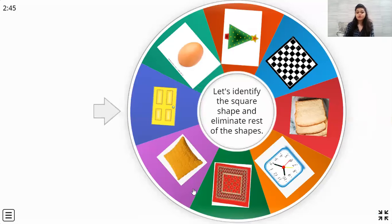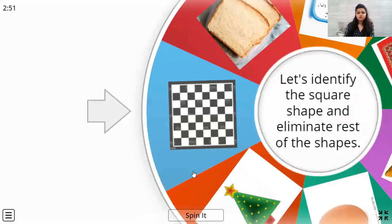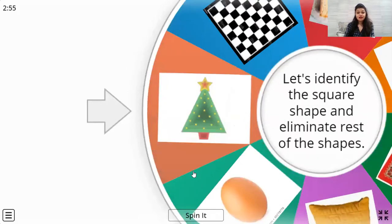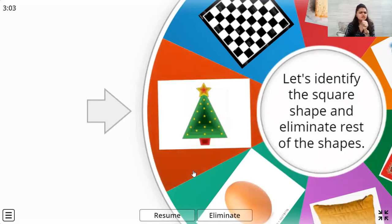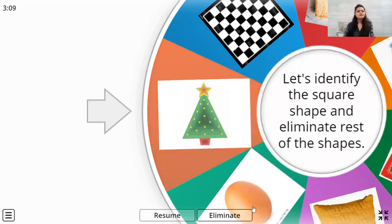Again we'll spin it. So what is it? Let's see. Which shape is it? Three sides? A three-sided shape is not a square shape. A four-sided shape is a square shape. So we are going to eliminate it.